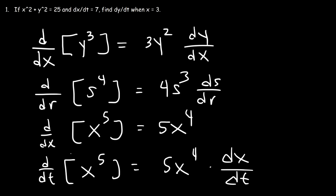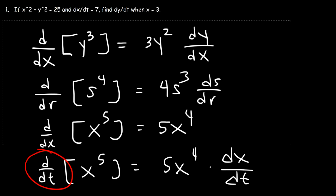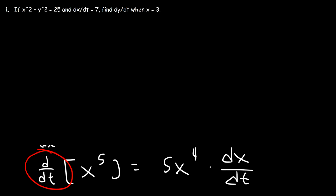And with related rates, that's what you're doing. You're going to differentiate the equation with respect to time. So let's say if we differentiate with respect to time, y to the 7th power. This is going to be 7y to the 6th times dy dt.